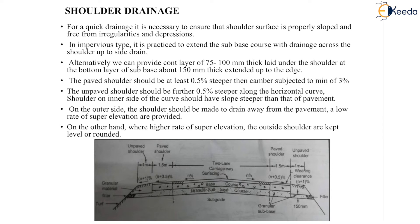Next is shoulder drainage. For quick drainage it is necessary to ensure that the shoulder surface is properly sloped and free from irregularities and depressions. In the impervious type, it is practiced to extend the sub-base course with drainage across the shoulder up to the side drain. Alternatively, a layer of 75 to 100 mm thick can be laid under the shoulder at the bottom layer of sub-base, about 150 mm thick, extended up to the edge.